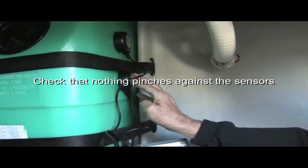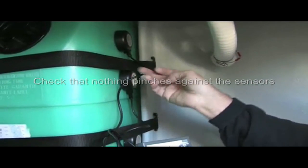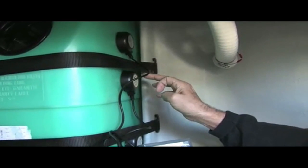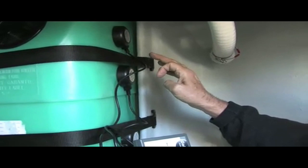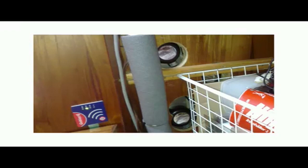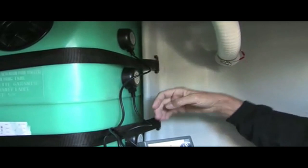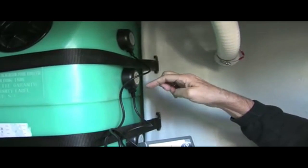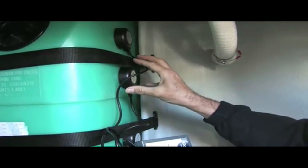You also need to check that nothing pinches against the sensors. In this case, these belts. It must be free around the sensors. For example, if the tank is situated in a narrow area, make the space around the sensors large enough. Two centimeters around the sensor is sufficient.